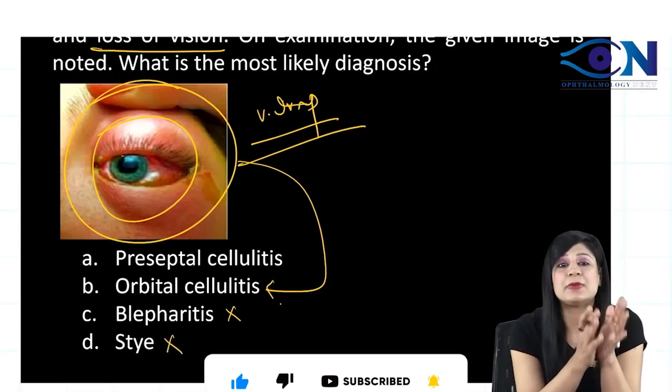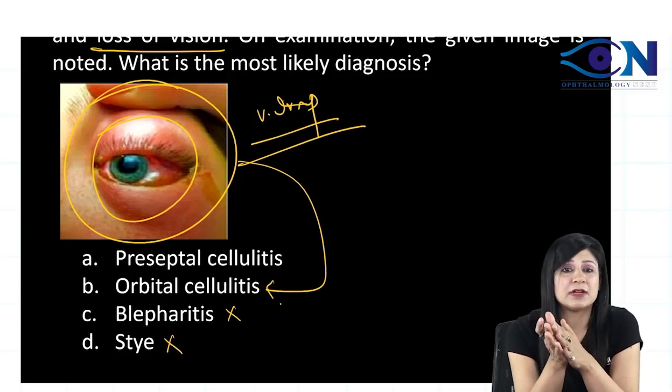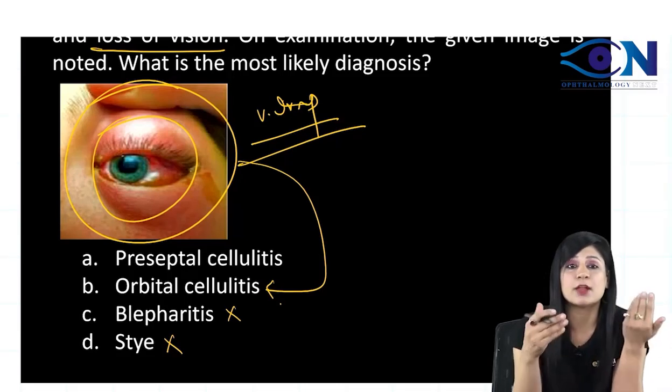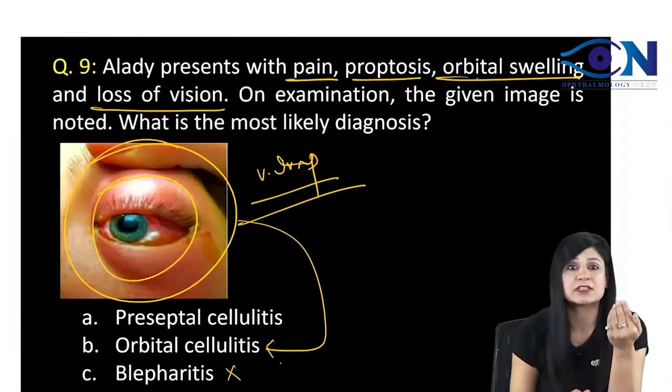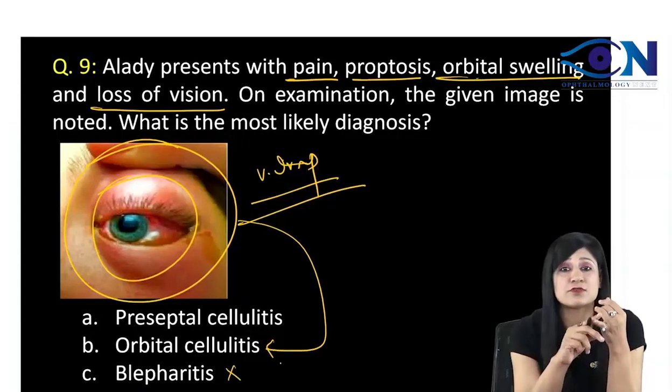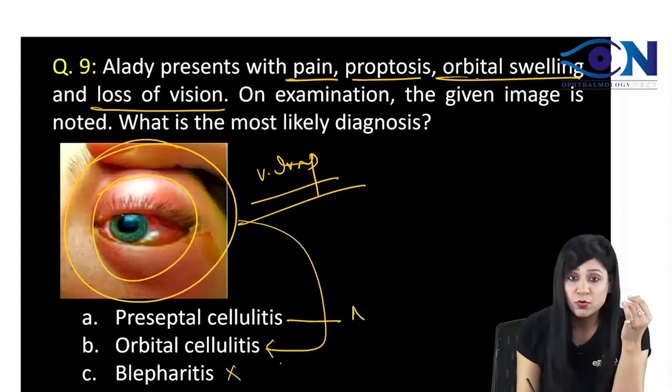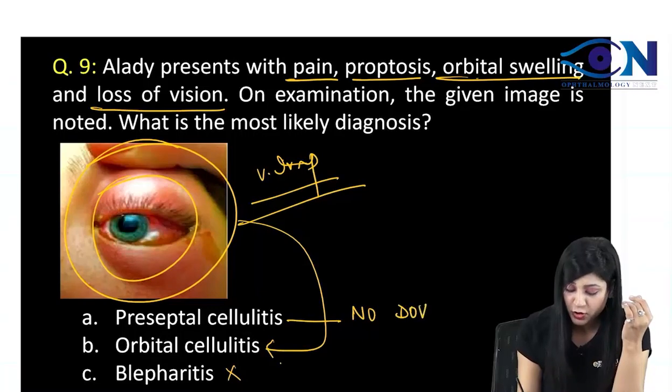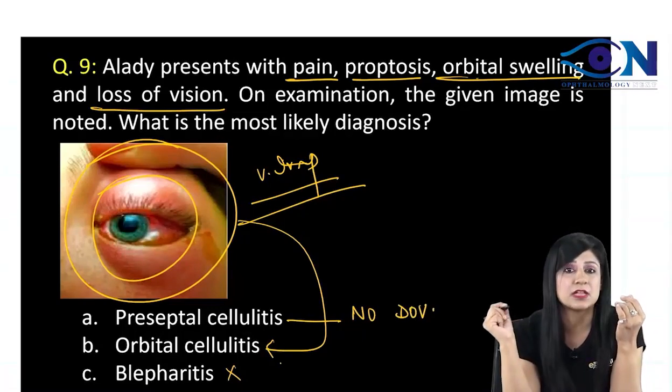Now, there are two things. We can have preseptal cellulitis or orbital cellulitis. Usually it is orbital cellulitis, which is the postseptal cellulitis, where you are having the loss of vision. You will have no loss of vision, no diminution of vision in preseptal cellulitis.